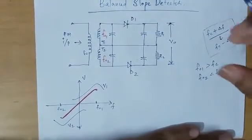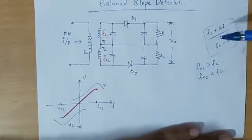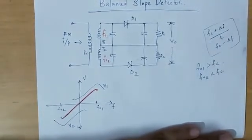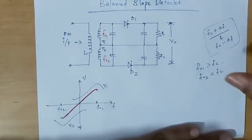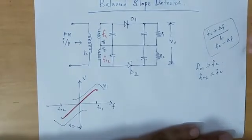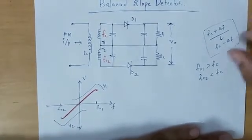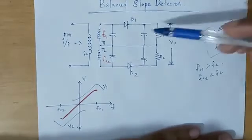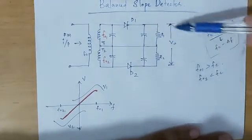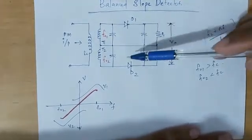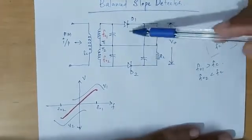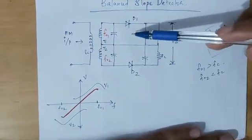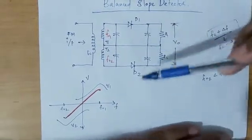We can use the waveform to demodulate the FM signal. The combined waveform — that is FM plus AM — is used. We can use the message signal to demodulate using diodes D1 and D2 through the envelope detector.